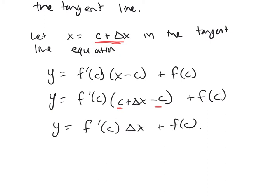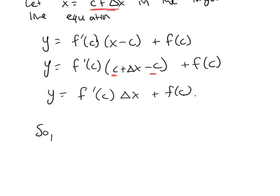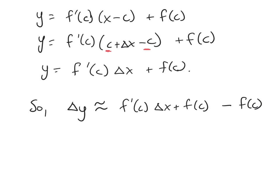So this means delta y is f prime of c times delta x plus f of c minus f of c. So what does this tell us? Delta y is approximately, if you notice this f of c and minus f of c cancel,